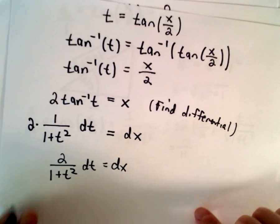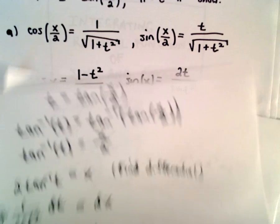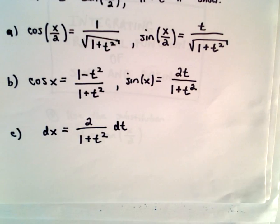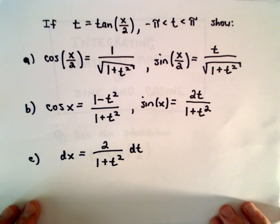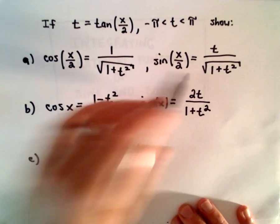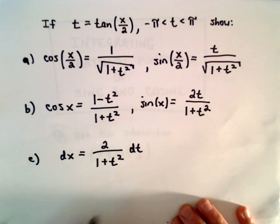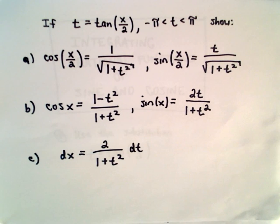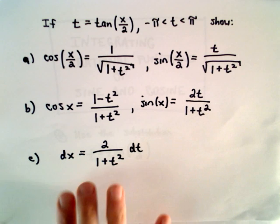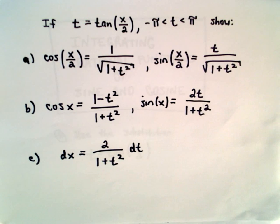Now we have derived all of our formulas. In my next videos, I'm obviously not going to re-justify these — I'm just going to start making use of them. But that's where they come from: a simple matter of using right triangles, some trig identities, and for part c, just finding a differential.